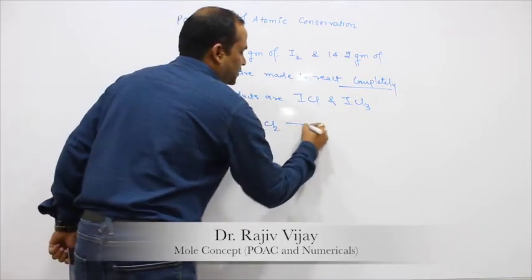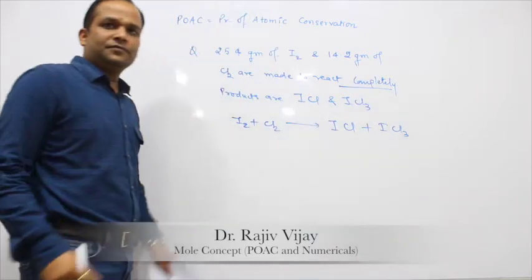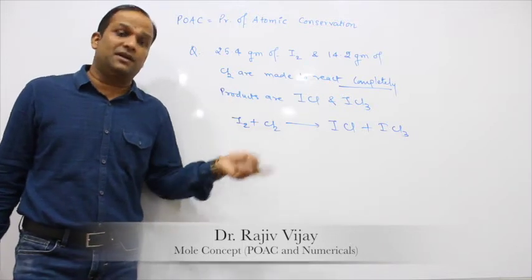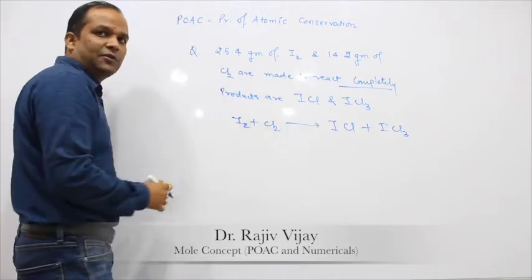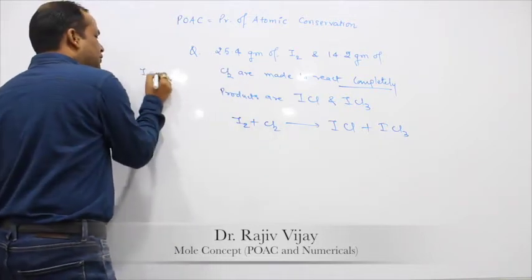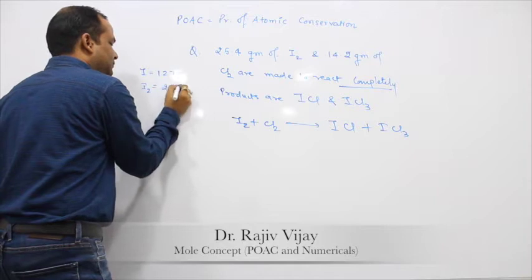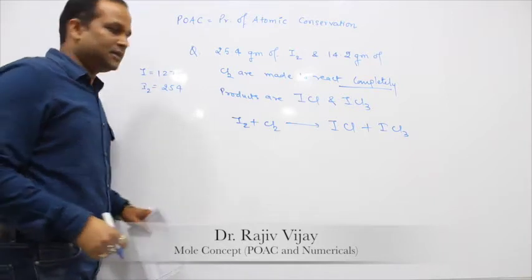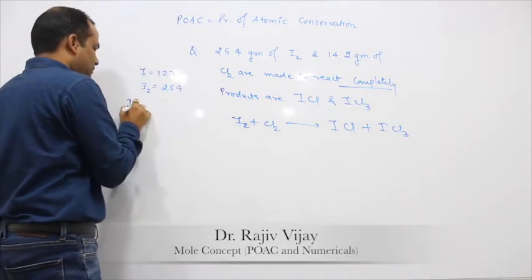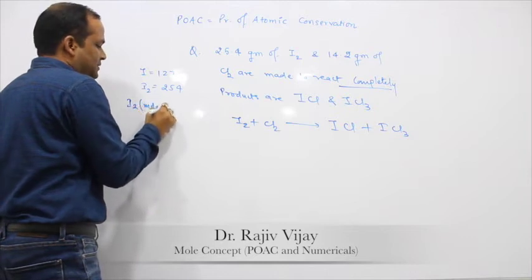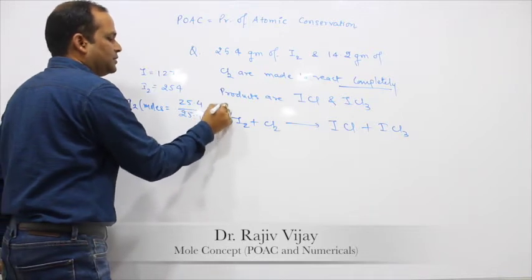The reaction is: I₂ + Cl₂ → ICl + ICl₃. There is no requirement to balance. We convert weight to moles. 25.4 grams of iodine: the atomic weight of iodine is 127, so the molecular weight of I₂ is 254. Therefore moles of I₂ = 25.4 ÷ 254 = 0.1 moles.